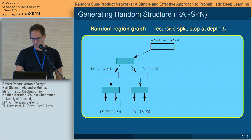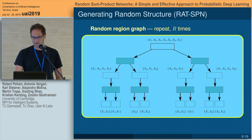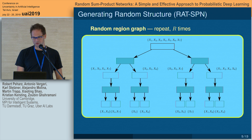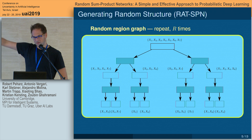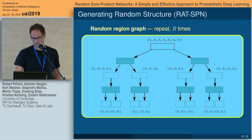We split our root region into two parts and recursively repeat this until a certain split depth D, which is a hyperparameter. We can repeat this R times — growing the region graph with multiple recursive splits attached to the root region, where R is a second hyperparameter. After constructing our random region graph, we compile it into an SPN.